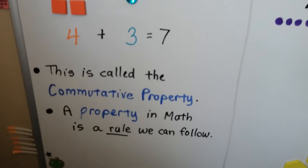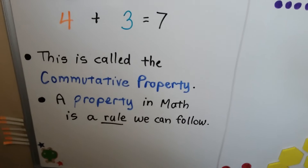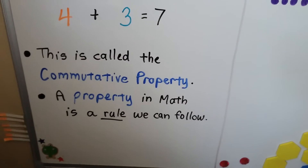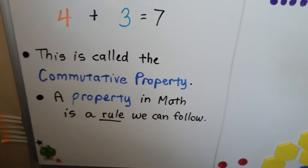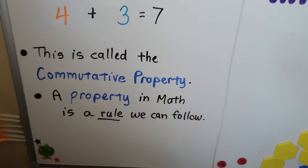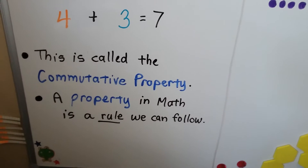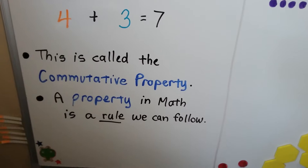This is called the commutative property, and a property in math is a rule we can follow.